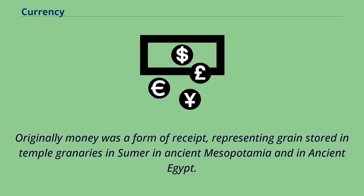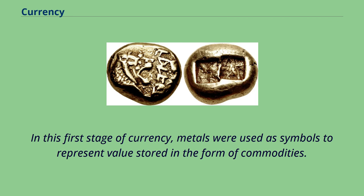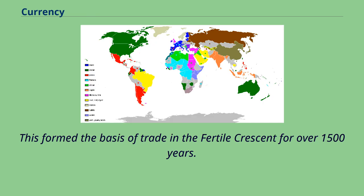Originally money was a form of receipt, representing grain stored in temple granaries in Sumer in ancient Mesopotamia and in ancient Egypt. In this first stage of currency, metals were used as symbols to represent value stored in the form of commodities. This formed the basis of trade in the Fertile Crescent for over 1,500 years.